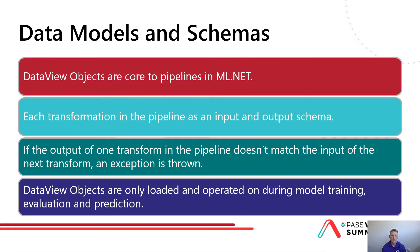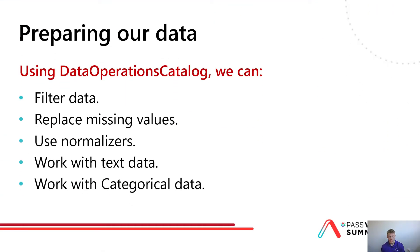We can load data from SQL Server, Azure SQL Database, Oracle, SQLite, PostgreSQL, and many more. Or perhaps our data is in JSON or XML format, or we just need to load data from in-memory collections using a method called LoadFromEnumerable. When we load our data, we load it into a DataView object for transformation. DataView objects are central to pipelines in ML.NET — each transformation will have an input schema with data names, types, and sizes it expects, and an output schema it produces. If these don't match, the application will throw an exception. DataView objects are only loaded and operated on during model training, evaluation, and prediction.